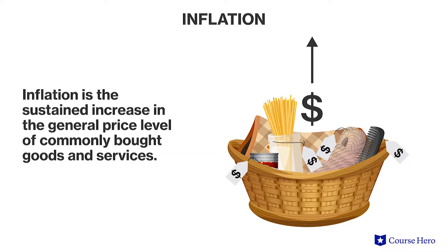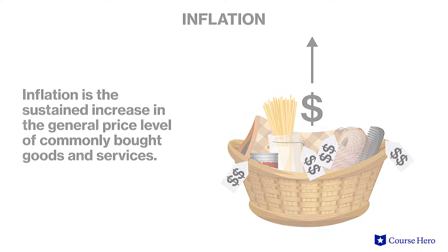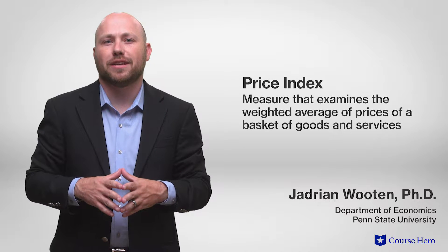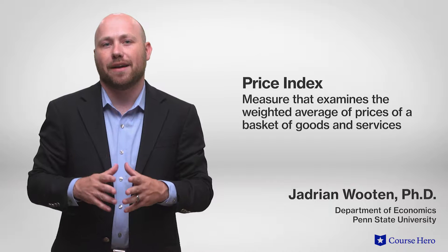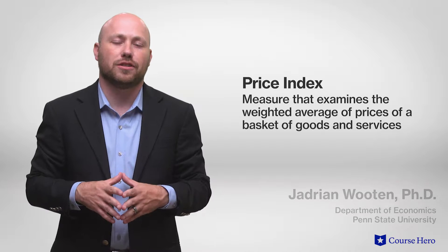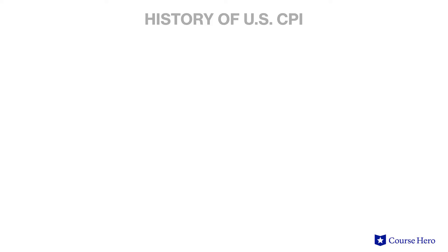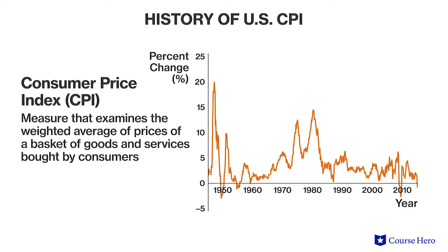Inflation describes the sustained increase in the general price level of commonly bought goods and services, and is calculated as a rate of change of a price index over a particular period of time. A price index is a measure that examines the weighted average of prices of a basket of goods and services. The consumer price index, CPI, is a common measure that examines the weighted average of prices of a basket of goods and services typically bought by consumers.